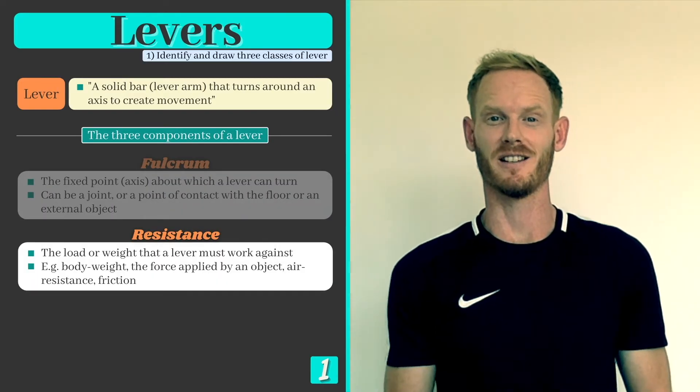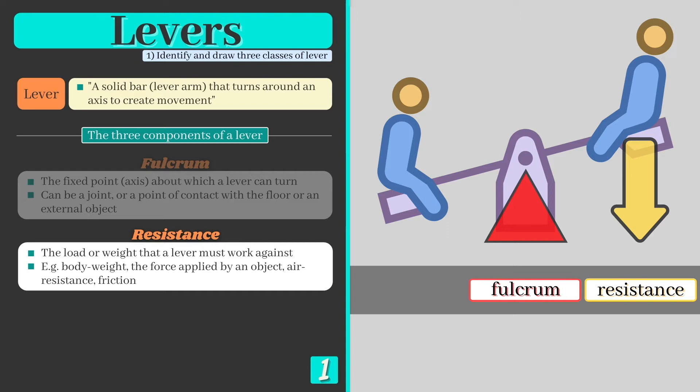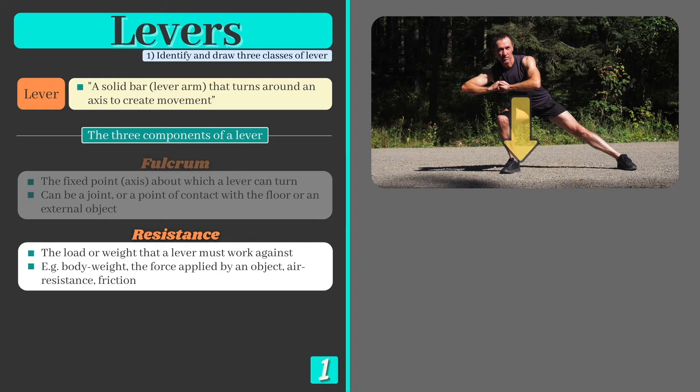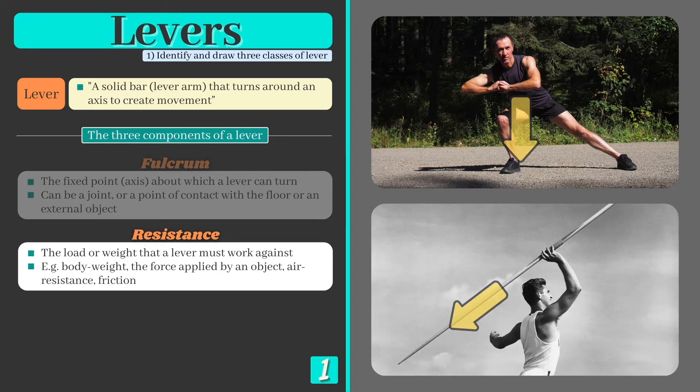The second component is termed resistance, and this is the load or weight that a lever must work against as it moves. In human levers, resistance is applied by the person's weight or body mass, or by an external object such as a dumbbell, football or javelin.